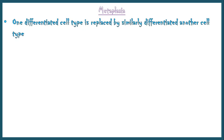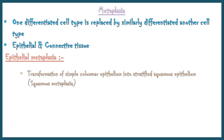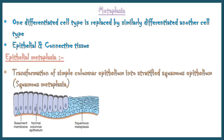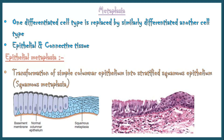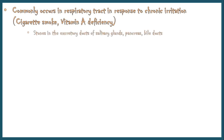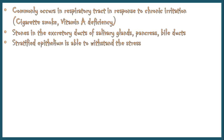Metaplasia is a special type of cell adaptation in which one differentiated cell type is replaced by another similarly differentiated cell type. Metaplasia commonly occurs in epithelial and connective tissue. Transformation of simple columnar epithelium into stratified squamous epithelium is the commonest form, also known as squamous metaplasia. Squamous metaplasia commonly takes place in the respiratory tract in response to chronic irritation like cigarette smoke and vitamin A deficiency. Stones in the excretory ducts of salivary glands, pancreas, and bile ducts also induce metaplastic transformation. The more robust stratified squamous epithelium is able to withstand the stress.